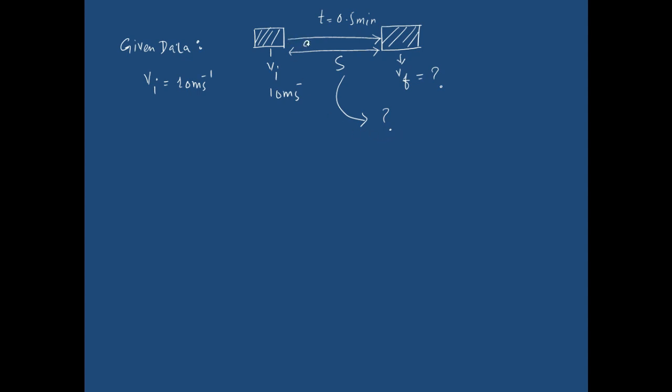The car accelerated with the acceleration of 0.2 meters per second squared. This value is given in the numerical, so a equals 0.2 meters per second squared. The time equals 0.5 minutes. Now convert the minutes into seconds because minute is not the SI unit. We have to put all the units in SI units, so to convert 0.5 minute to seconds, multiply it with 60. It converts to 30 seconds.